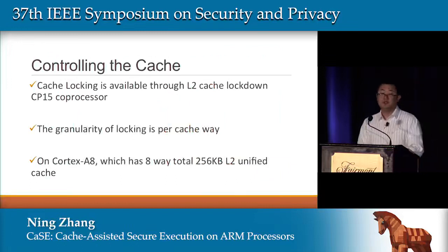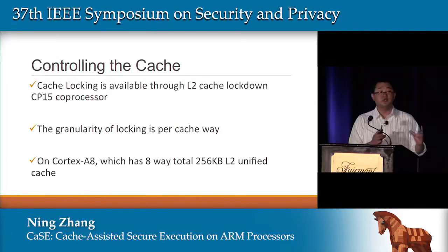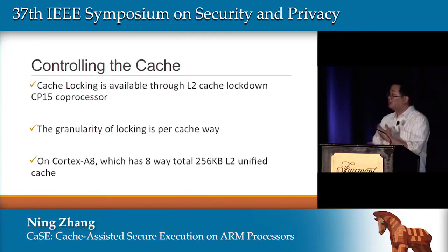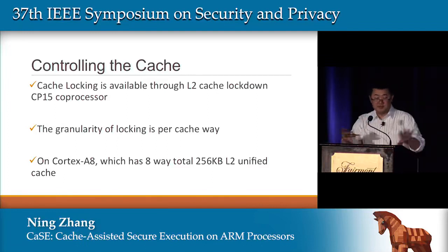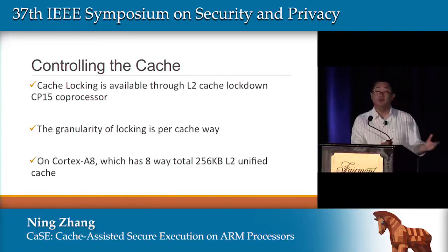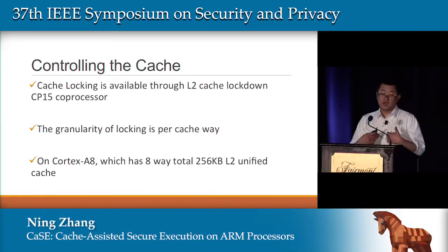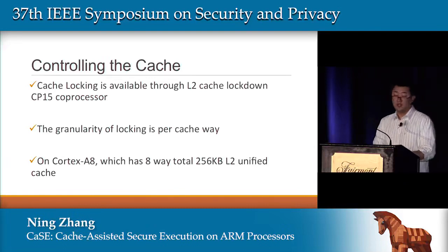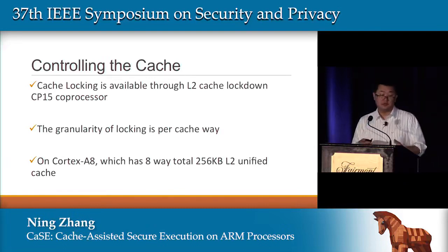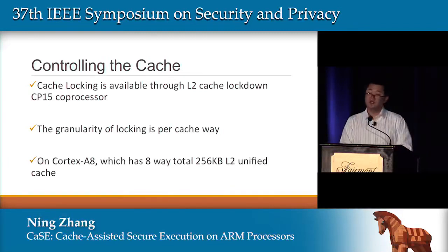Now for implementation details. The first detail is controlling the cache. Cache is designed to be a transient feature in processors — you're supposed to use it as a black box. We use the cache lockdown registers. In ARM, to give designers performance enhancement capability, they introduced cache lockdown: if you know a cache will be frequently used, you can lock it down to avoid cache pollution. The granularity of locking in our Cortex-A8 processor is per cache way, and there are eight cache ways of total size 256 KB of L2 unified cache in Cortex-A8. We can lock the cache as 32 KB, 64 KB, or 96 KB at a time.